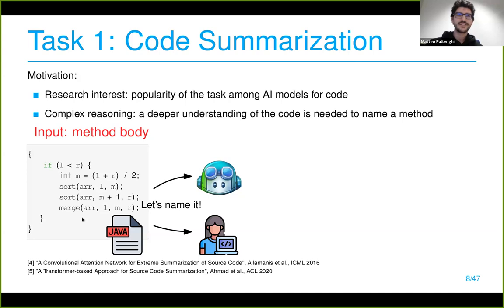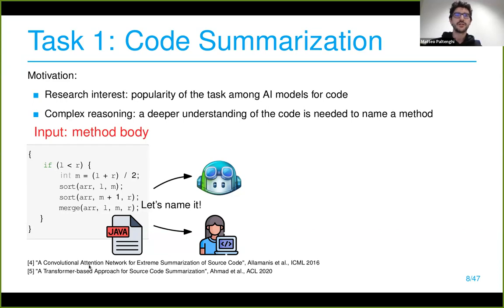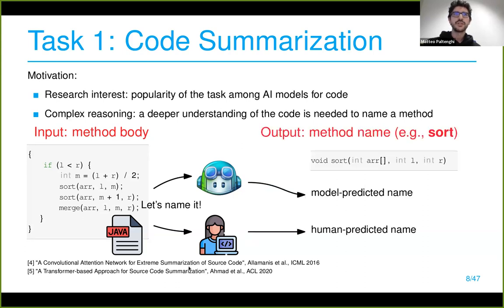We feed the method body — in this case Java code — to both the AI and the human and ask them to name it. The AI models are two models specifically trained for code summarization: one transformer-based and one convolutional neural network-based. Both have attention layers so we can extract their attention. They output a method name — in this case something like 'sort'.